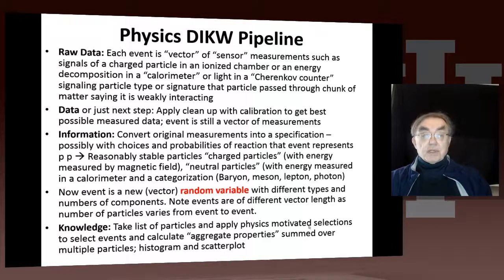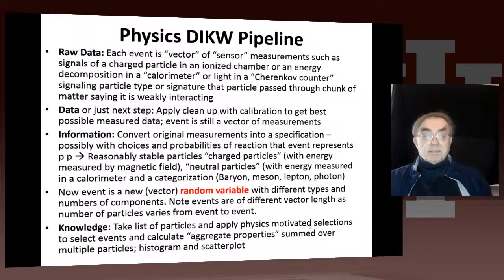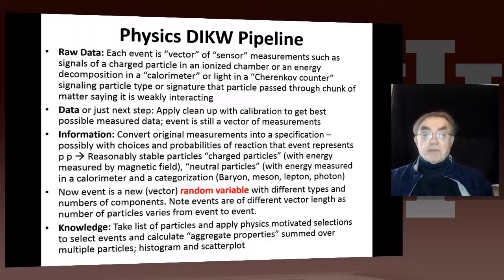And of course, neutrinos are also in that category. So that's raw data — it's just flying at you from the apparatus, that giant thing. Now we have data, which you clean up by calibrating the information to get the best possible measured data. And you still have, effectively, a vector of measurements.